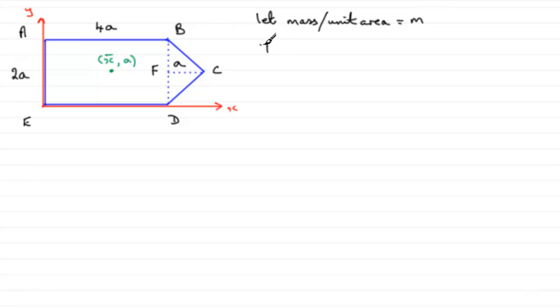So when it comes to the total mass, the total mass is going to be the area of the rectangle, which is going to be 2A times 4A, so in other words 8A squared. And to that, I'm going to need to add the area of the triangle here. So that's half the base, half of 2A.